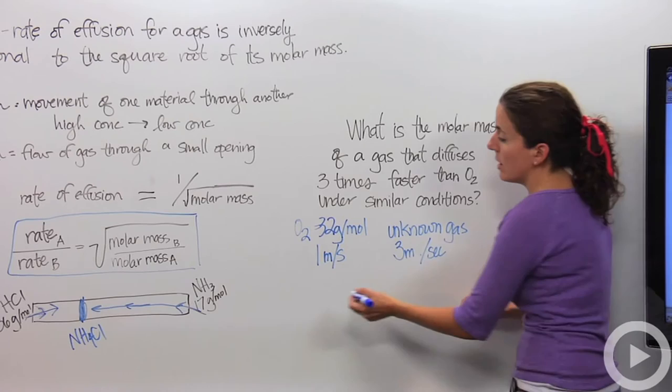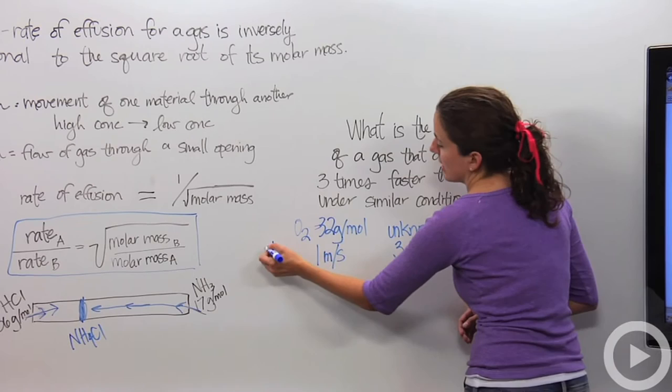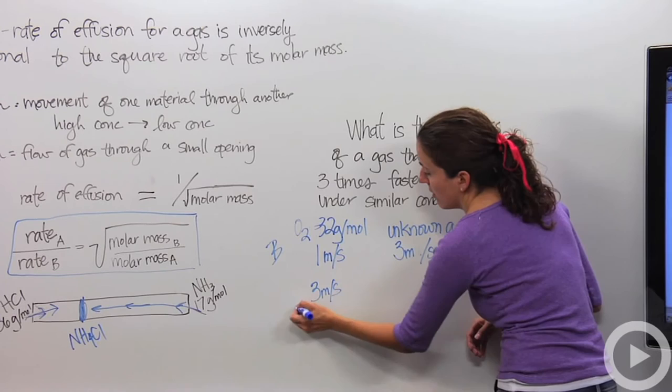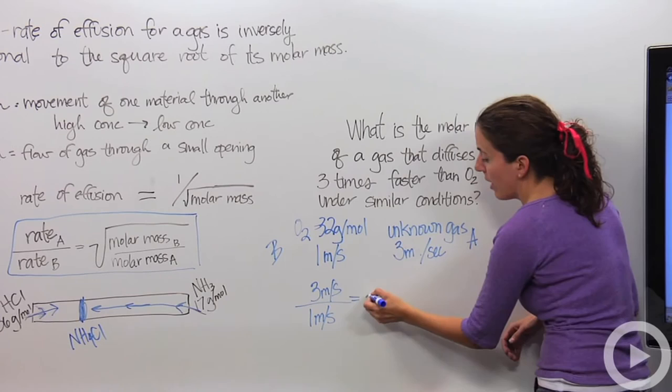Then oxygen gas travels. If this travels three times faster, this is going to travel one meter per second. So if we were to put this, the rate of A, I'm going to say unknown gas is A, oxygen is going to be B. The rate of A is three meters per second. The rate of B is one meter per second.